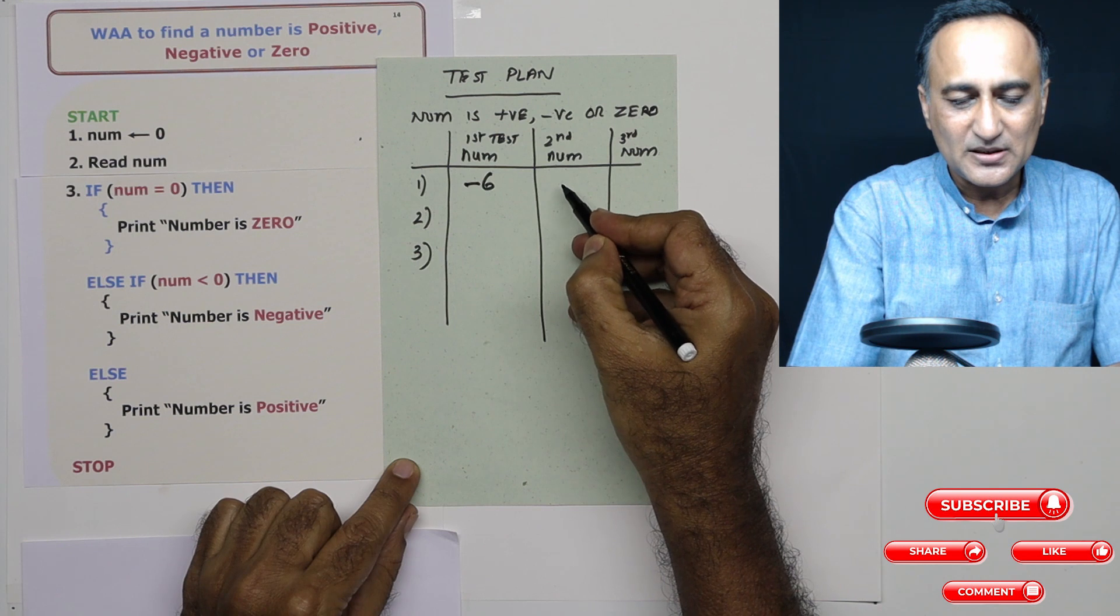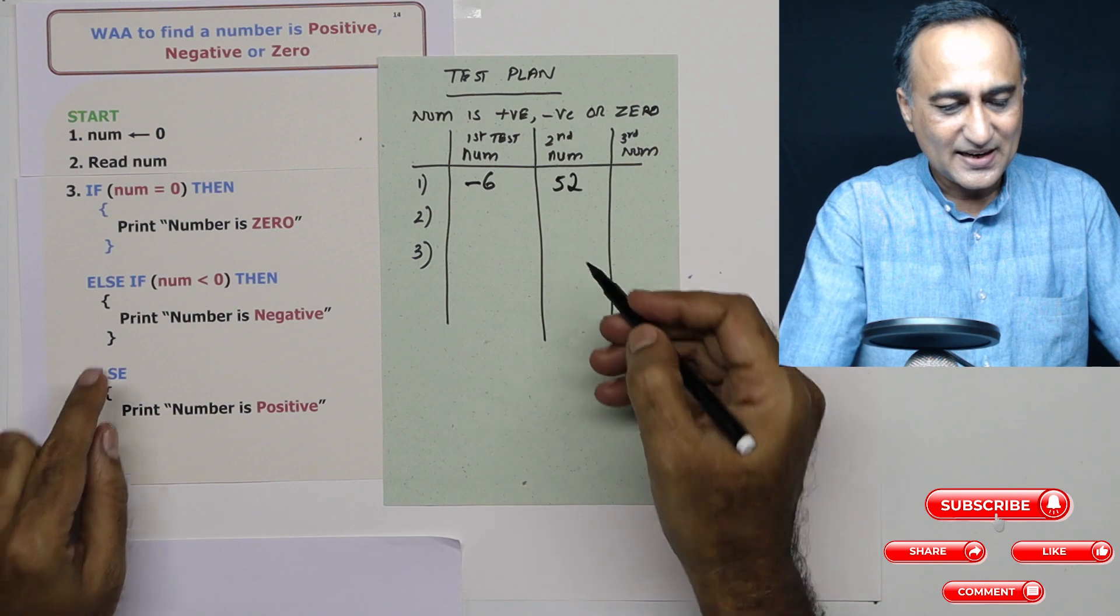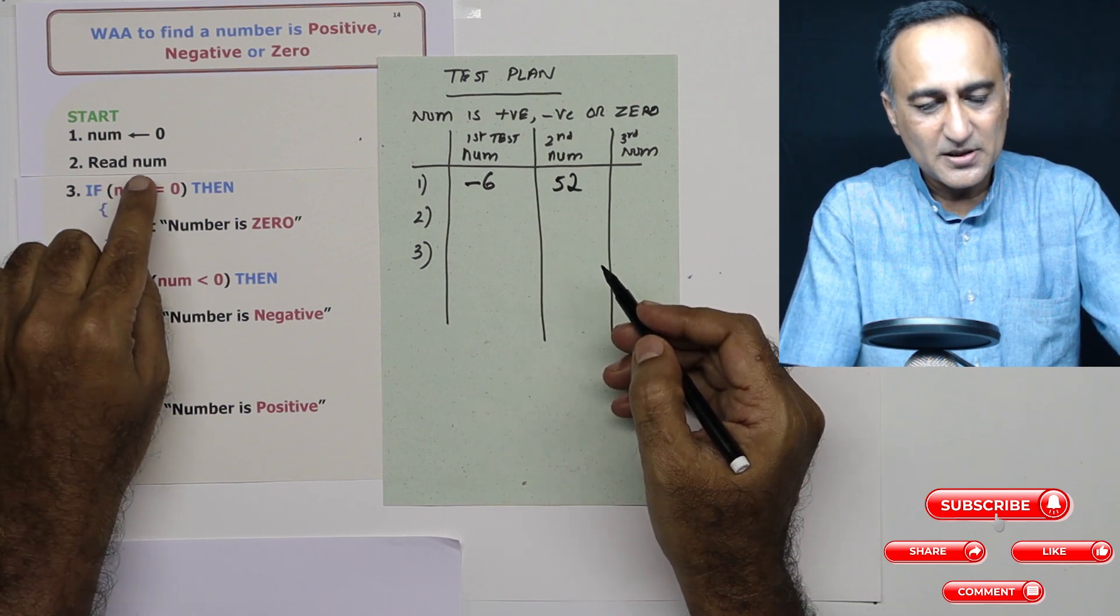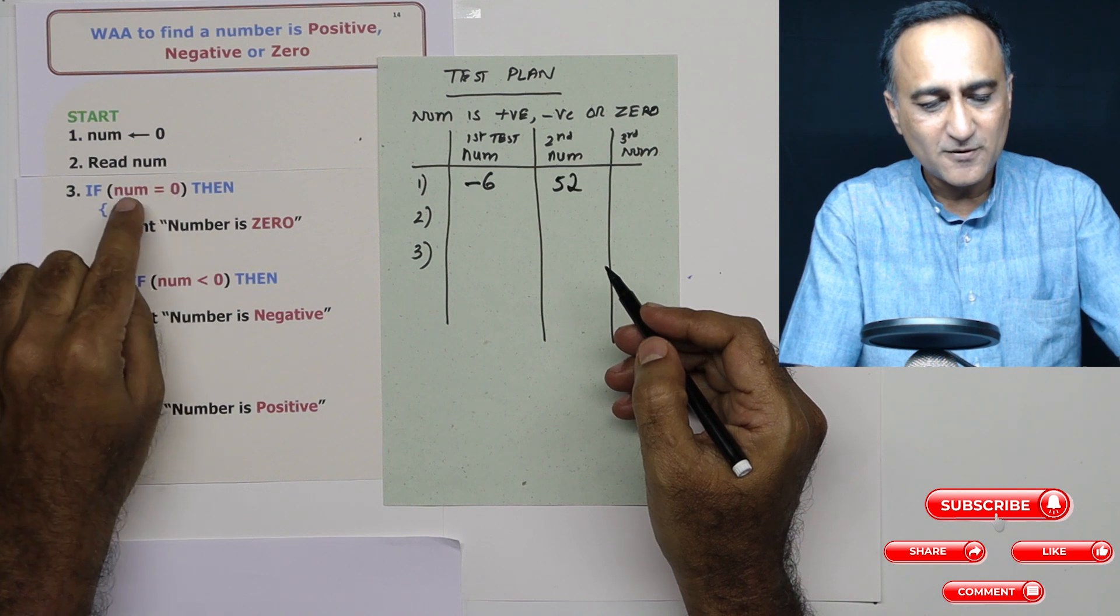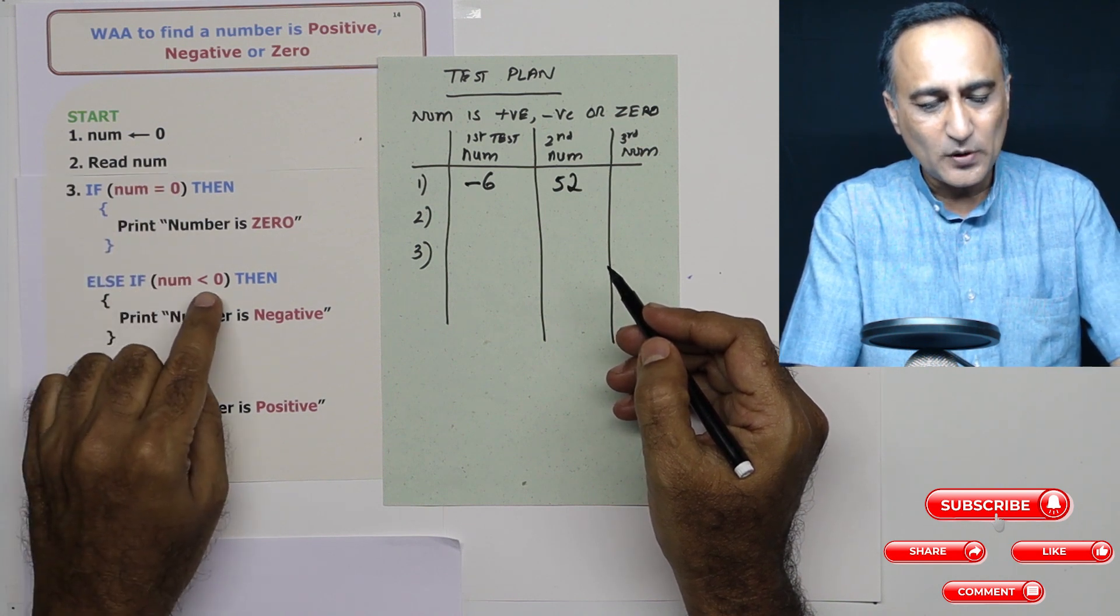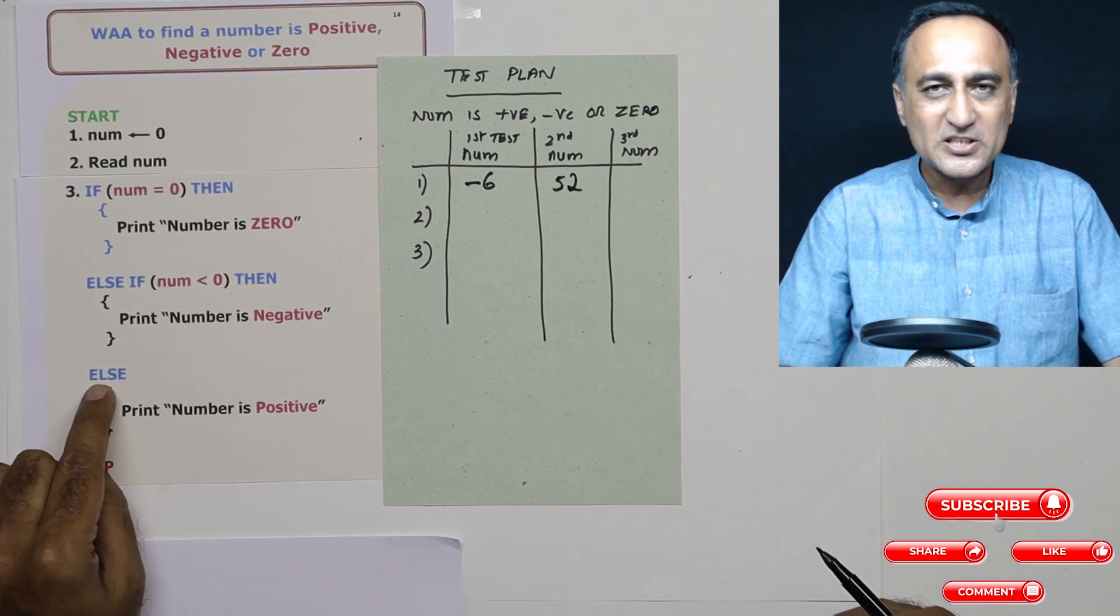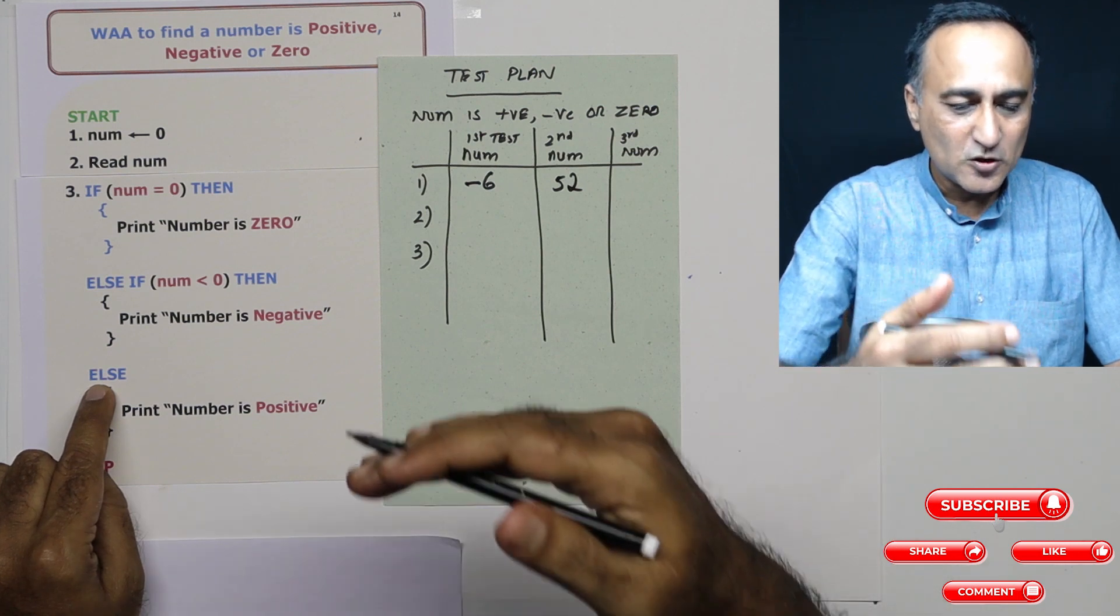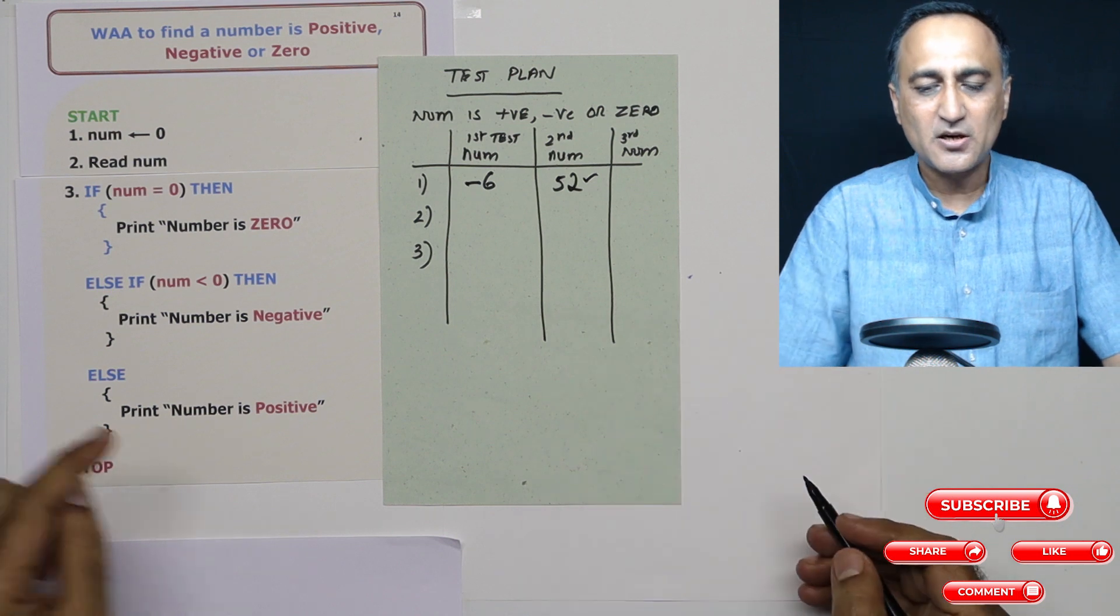Let's take the number this time, let's say 52. This is the second test. Read the number, number is 52. If 52 is equal to zero, this is false. I come here, else if 52 less than zero, this is also false. Then automatically I come to the else part because I know the number is not zero, not negative. So it has to be positive. So print number is positive.